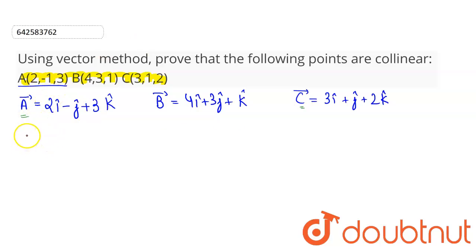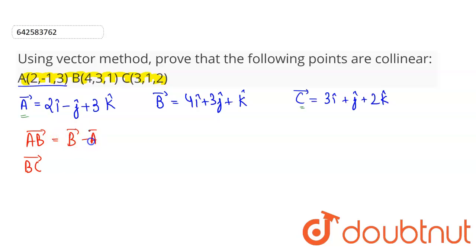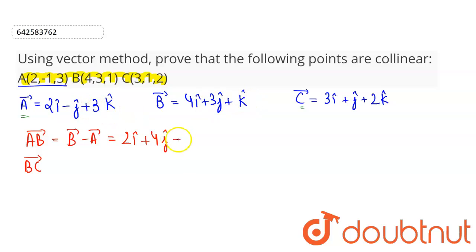Here we will be determining the AB vector and the BC vector, and we will be checking whether these two vectors are parallel or not. The AB vector can be written as position vector of B minus position vector of A. This equals: 4i-cap minus 2i-cap is 2i-cap; 3j-cap minus of minus j-cap gives plus 4j-cap; and k-cap minus 3k-cap gives minus k-cap.